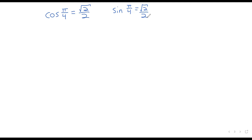The sine of pi over 4 is also the square root of 2 over 2. These arguments are a little less straightforward, but that's a good way of saying it.